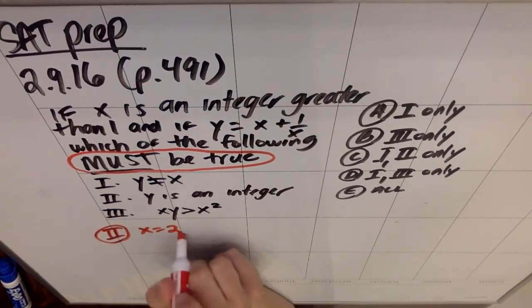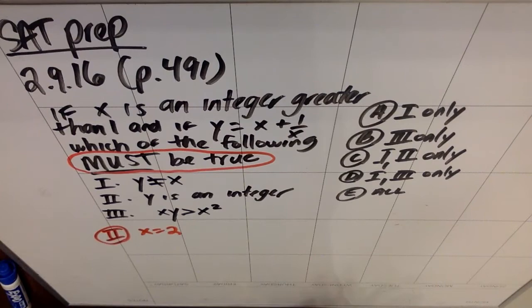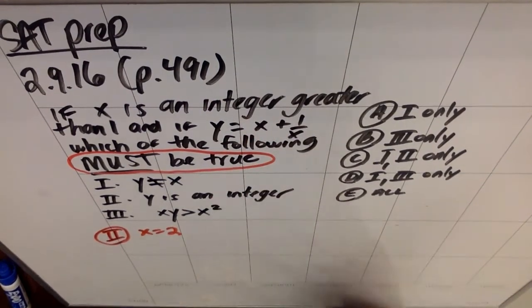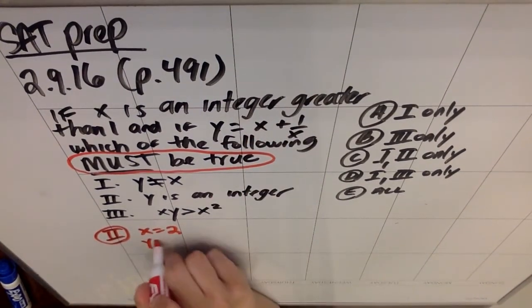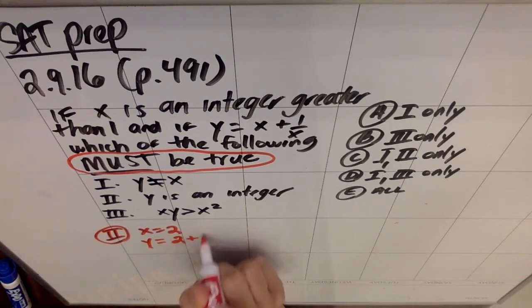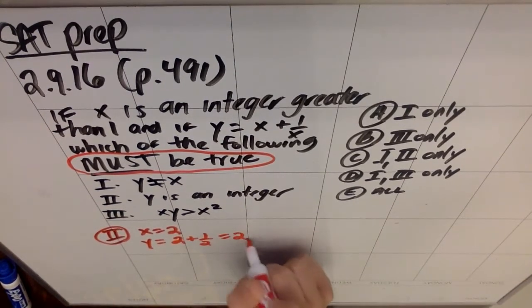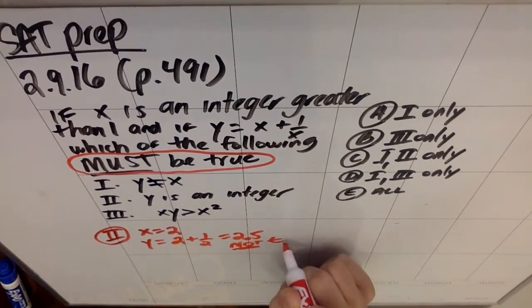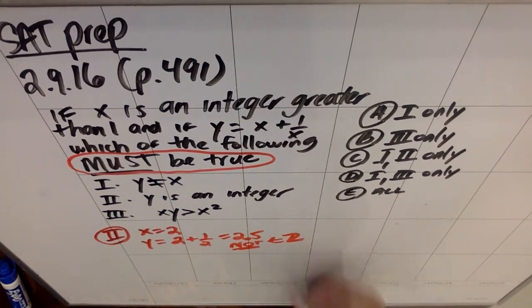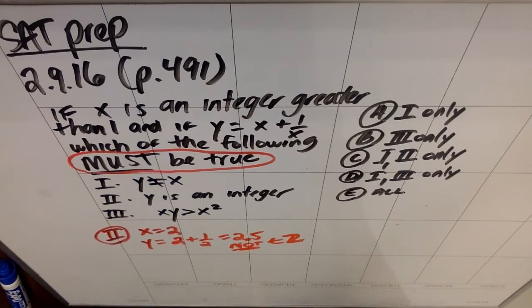I'm going to go ahead and pick x is two, which is the easiest number that I can think of for x that is an integer greater than one. And I'm going to show that y would be two plus one half, which is 2.5. That is not an integer. That is not an element of Z, which is how we say integers.